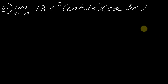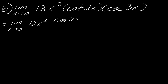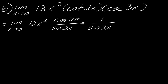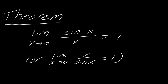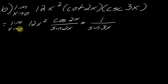Moving on to the next problem. As you inspect this, we don't see any sine, but best practice is to first rewrite trig functions in terms of sine and cosine when evaluating a limit. So cotangent of 2x becomes cosine of 2x over sine of 2x, and then 1 over sine of 3x. Now, if you plug zero in, you get zeros in the denominator and a zero over zero situation — that's the hint that you need to use the theorem.